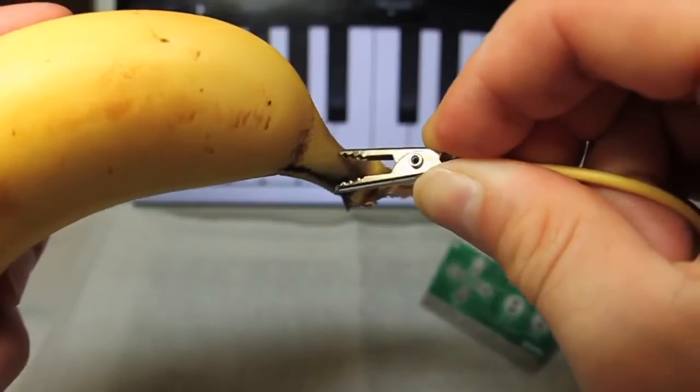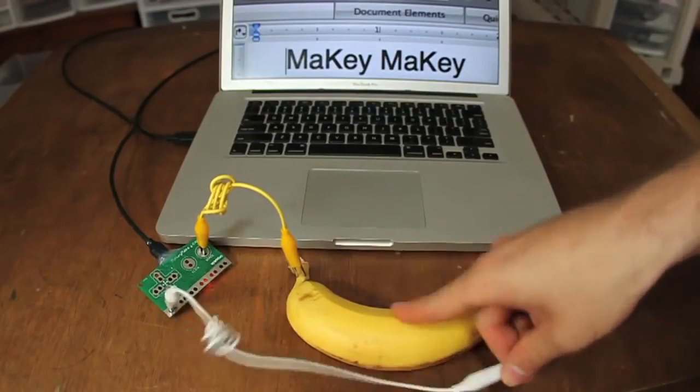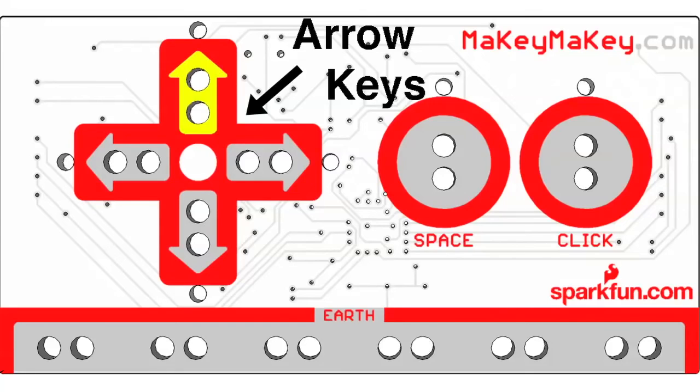where you take real-world objects and map them onto an object in Scratch so that when you hit something like a banana, it makes the sound of a conga.